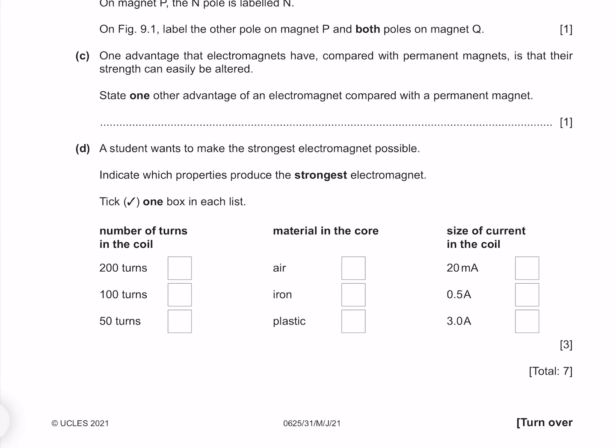One advantage that electromagnets have compared with permanent magnets is that their strength can easily be altered. State one other advantage of an electromagnet compared with a permanent magnet. Unlike permanent magnets, electromagnets can be switched off.